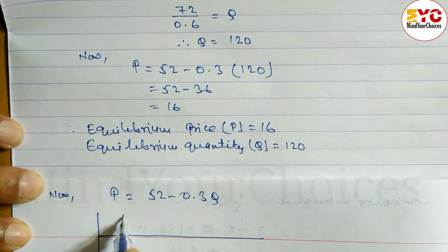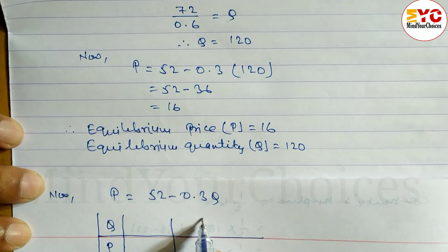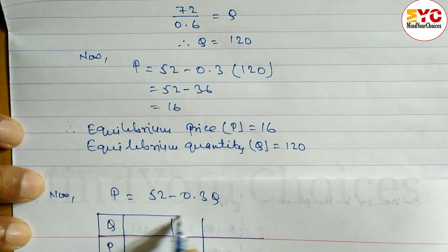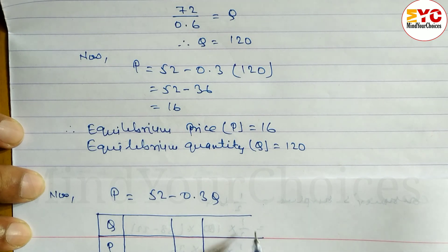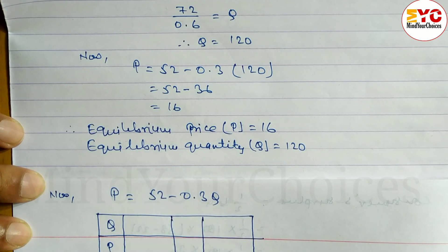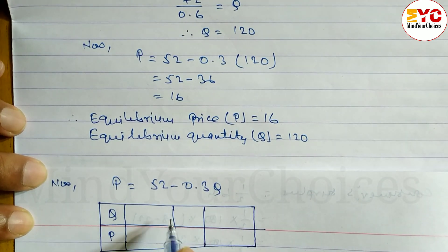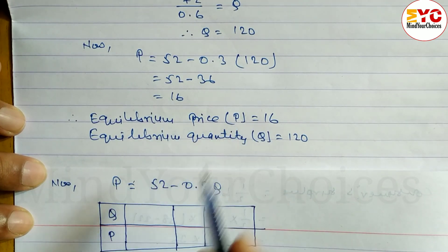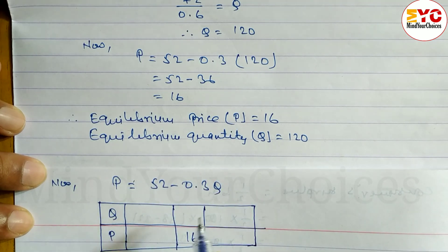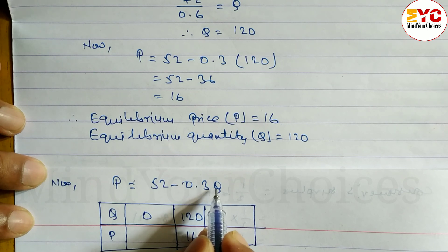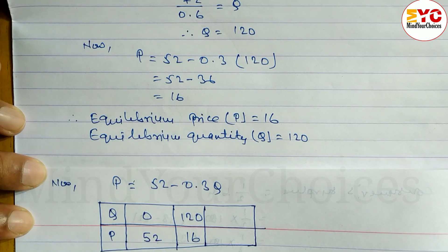We have to make a table — x-axis for quantity and y-axis for price. So first, write down Q and then P. In the middle, we write the equilibrium price and equilibrium quantity. Before and after that we write one value of P and Q each — no need for two more, just one front and one back to make one straight line. The equilibrium price is 16, equilibrium quantity is 120. When Q = 0, P = 52 minus 0.3 × 0 gives P = 52.